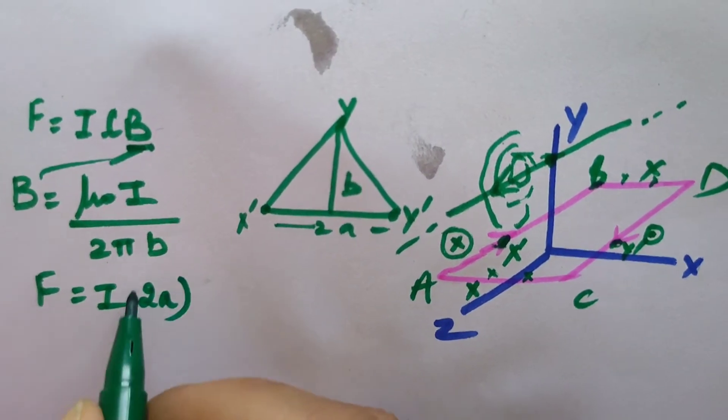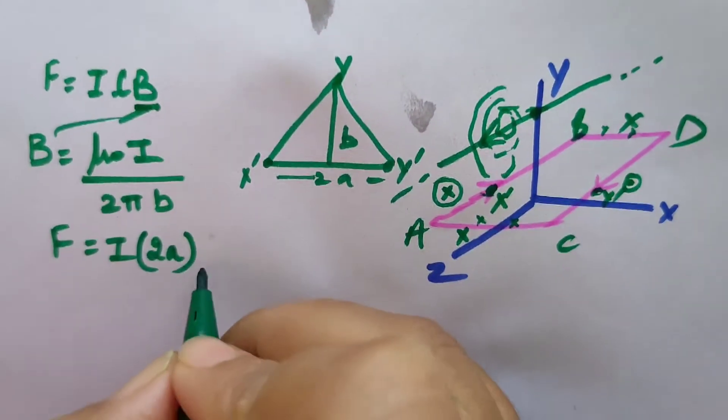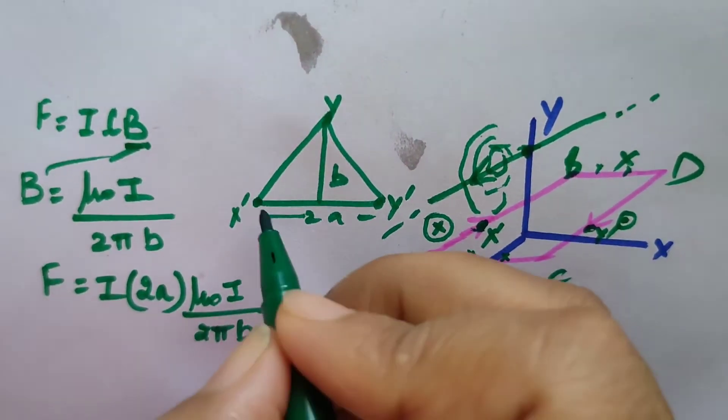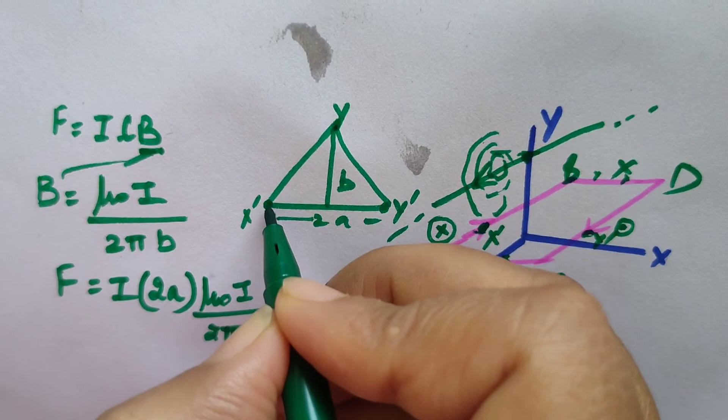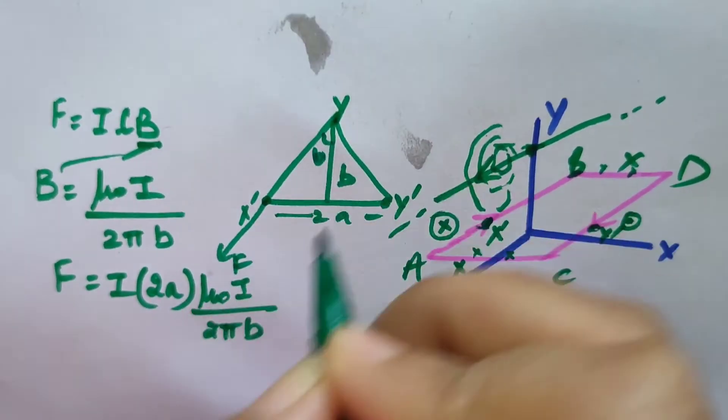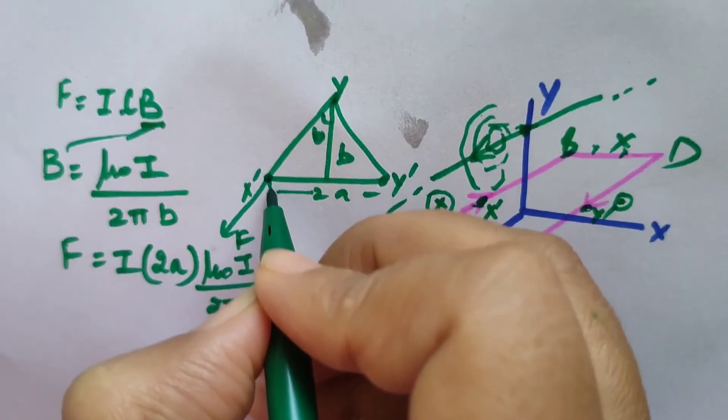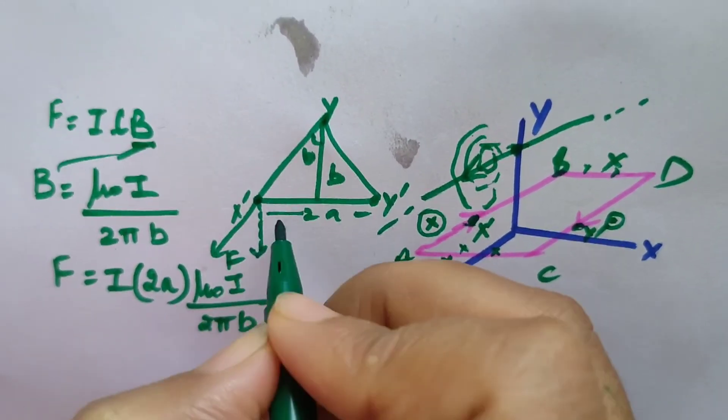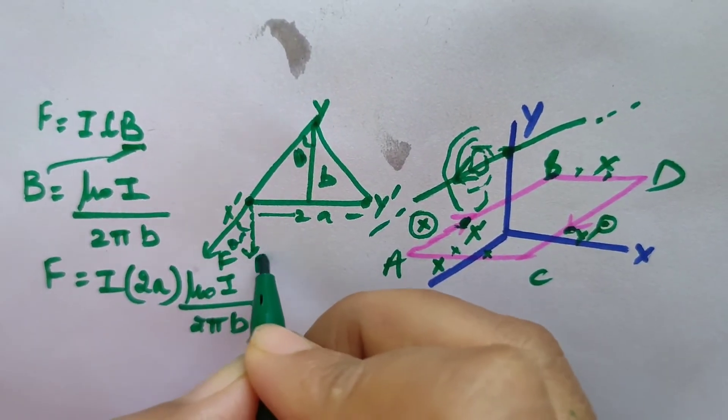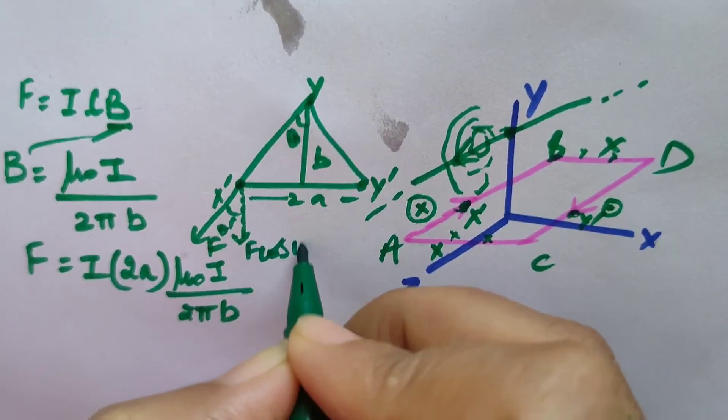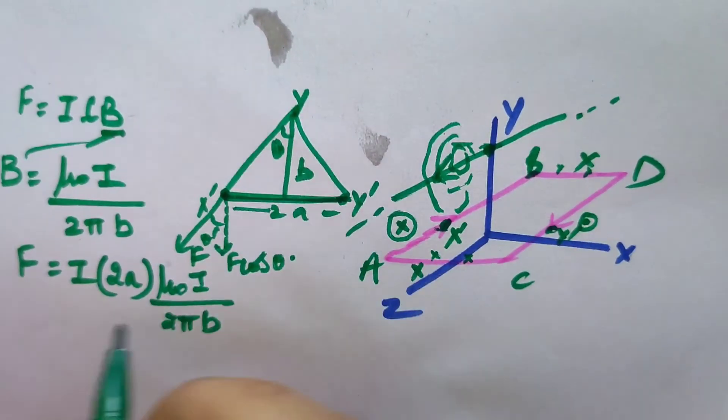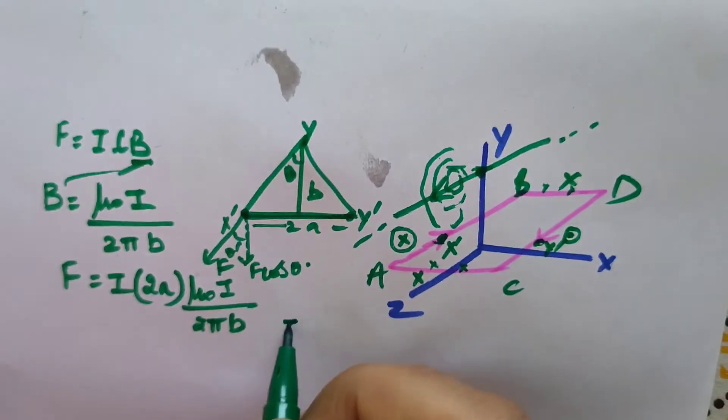We can put this magnetic field value in this formula, so F is going to be I times L, which is the total length of this wire 2a, and B is μ₀I/(2πb). If this is θ, then this F will be divided into two components: F cos θ and the perpendicular component.